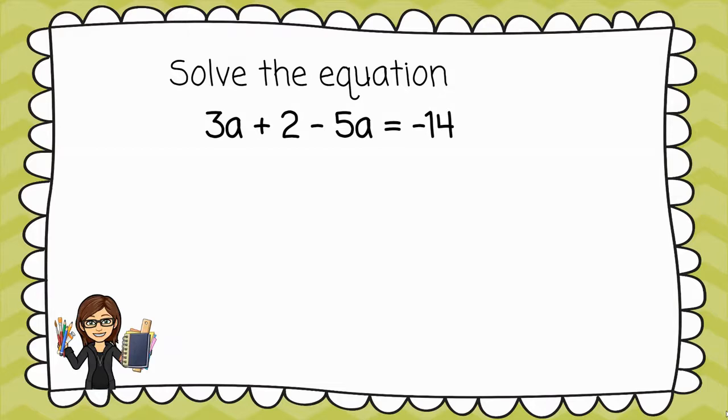Now our first step here is to not actually solve. Instead, we want to simplify. Focus on the 3a minus 5a. Because these have the same variable and the same exponent, we know these are like terms, so we can combine them.